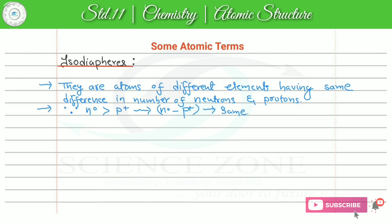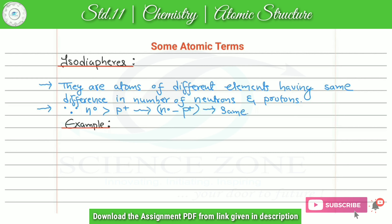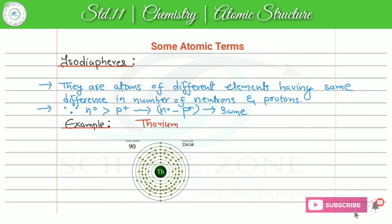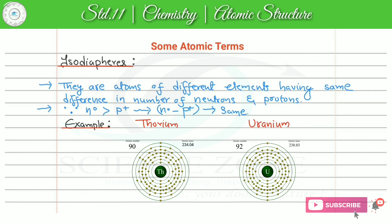To understand this concept, we will take an example. मैं दो different radioactive species यहां पे example में consider कर रहा हूं — first is thorium and second one is uranium. Thorium और uranium दोनों ही radioactive species हैं। इनको nuclear notation में express करता हूं — thorium का symbol है Th, uranium is U.